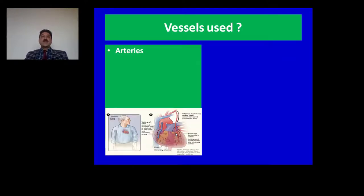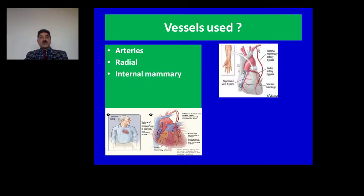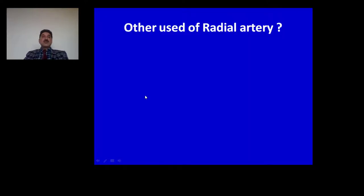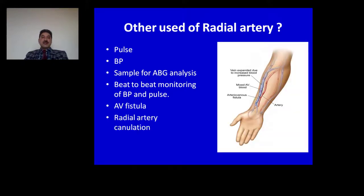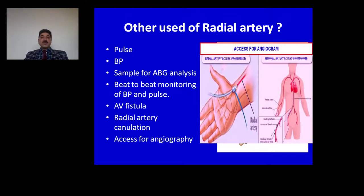What are the various vessels used for this grafting? Among arteries, the radial artery and internal mammary artery are used for grafting. Among veins, the long saphenous vein is used for coronary bypass surgery, because its tunica media resembles that of an artery. The radial artery is also commonly used for arterial blood gas analysis, beat-to-beat monitoring of pulse and BP, making an AV fistula in patients on dialysis, radial artery cannulation, and as a route for angiography — the cardiac catheter can be inserted either through the radial or femoral artery. The brachial artery is also used for cardiac angiography.